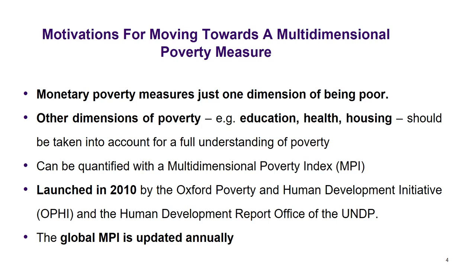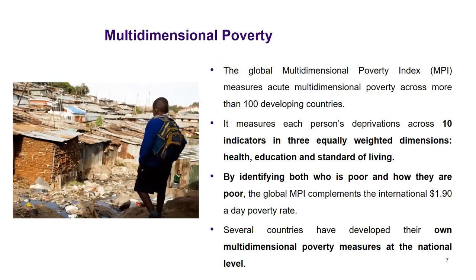This MPI — multidimensional poverty index — is updated annually. It's a global MPI, but countries also have their own national MPI, where they use specific indicators which they think are more appropriate for their country. The global MPI measures acute multidimensional poverty across more than 100 developing countries. It measures each person's deprivations across 10 indicators in three equally weighted dimensions: health, education, and standard of living.